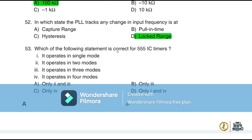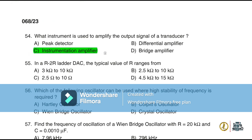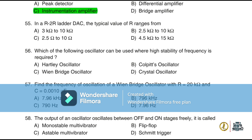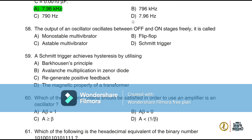Question 53: The 555 IC timer operates in three modes. Question 54: The instrument used to amplify the output signal of a transducer is an instrumentation amplifier. Question 55: In an R-2R ladder DAC, the typical value of R ranges from 2.5 kΩ to 10 kΩ. Question 56: The oscillator used where high stability frequency is required is a crystal oscillator. Question 57: The frequency of oscillation of a Wien bridge oscillator with R = 20 kΩ and C = 0.0010 µF is approximately 7.96 kHz.